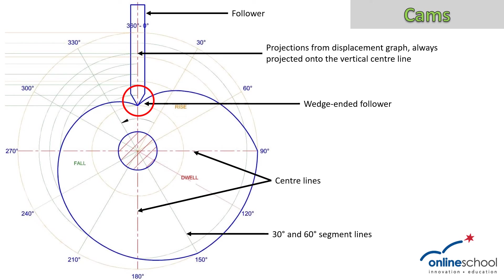Many people do not draw the minimum displacement in — I want to see this drawn in. Then we also need to remember that we have projection lines coming from the graph of displacement. All of these projection lines must always be projected up to the vertical center line, which will then meet the follower. Our follower can be positioned at any one of these 12 segments or 30-degree intervals. We always project from our graph of displacement to this vertical center line, the different heights that come from the graph, which we will discuss in the next lesson.